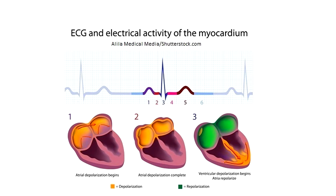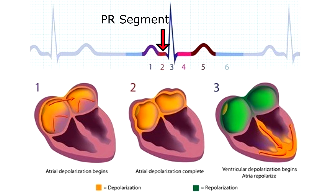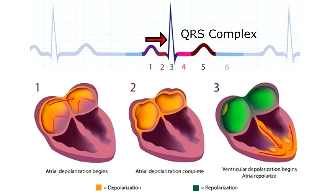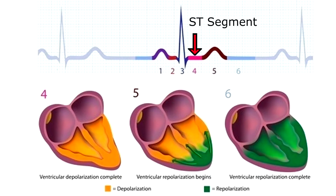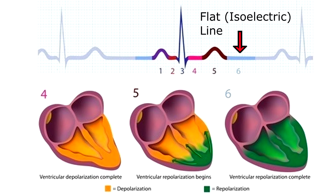Let's recap all that information and look at the PQRST complex to see how depolarization and repolarization occur in each part. Section one is the P wave — atrial depolarization beginning, contraction of the atria. Two is the PR segment — atrial depolarization complete. Three is the QRS complex — ventricular depolarization beginning, and within it, atrial repolarization. Four is the ST segment — ventricular depolarization completing. Five is the T wave — ventricular repolarization beginning. And six is the flat isoelectric line — ventricular repolarization complete.